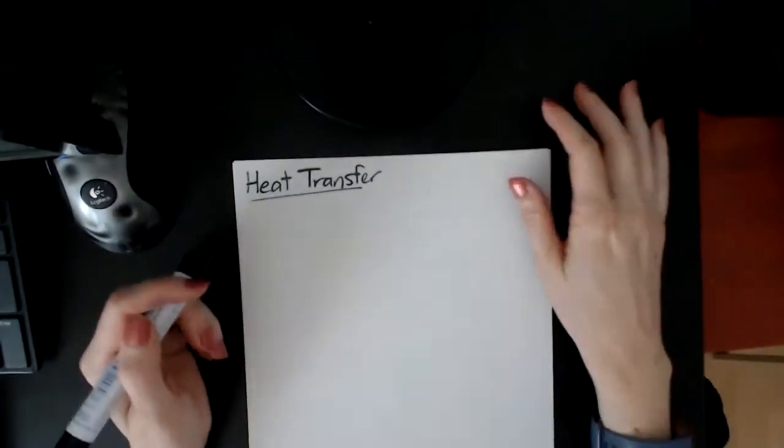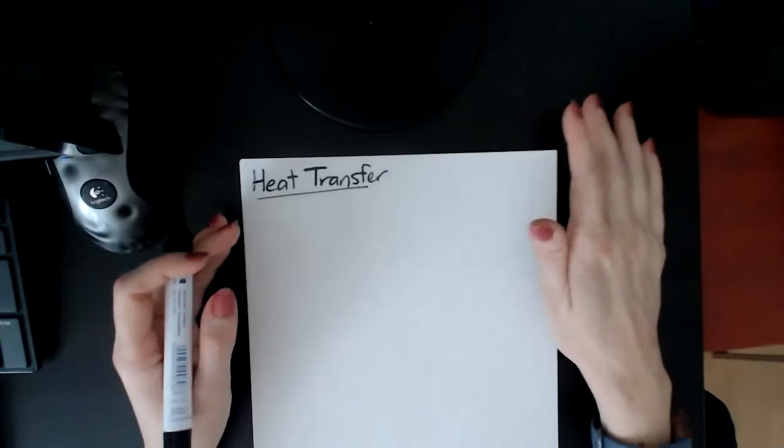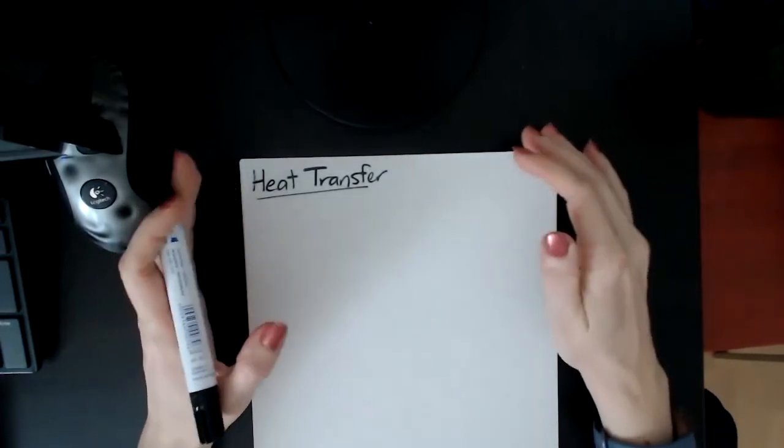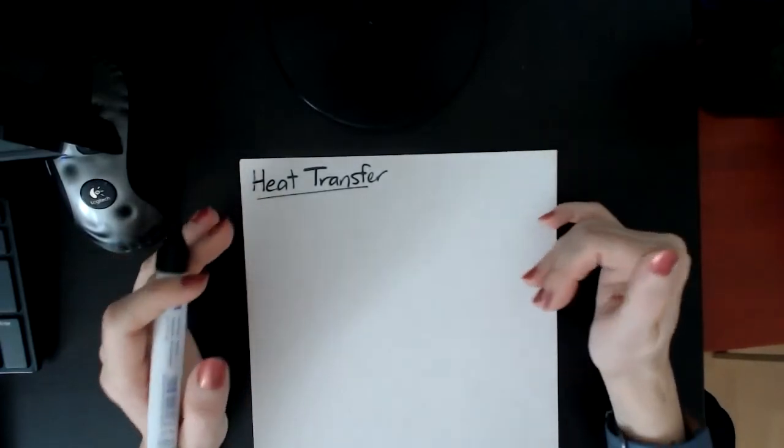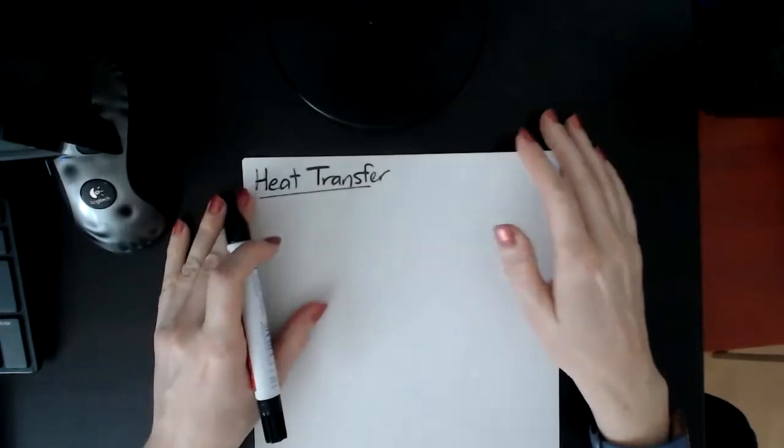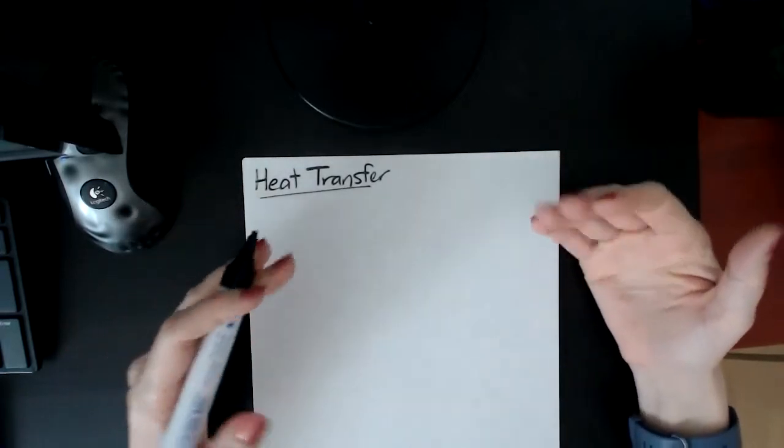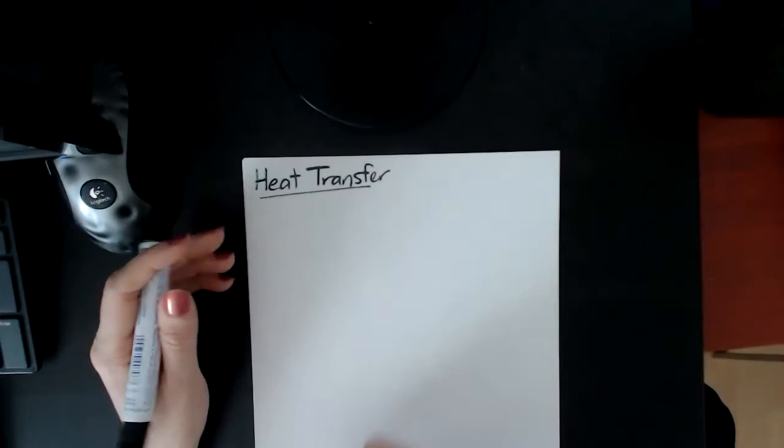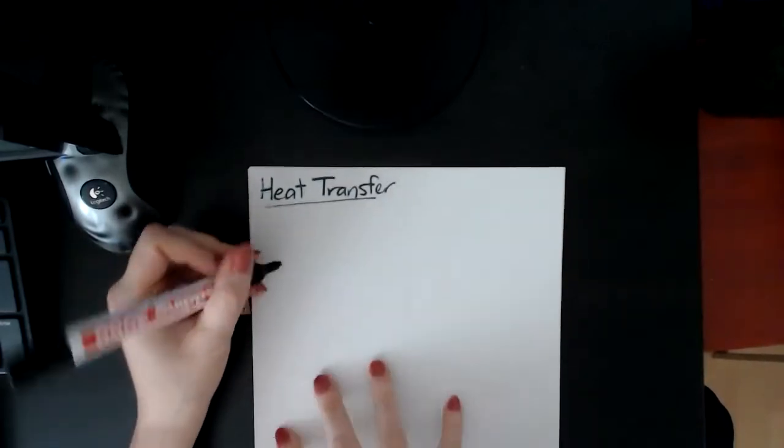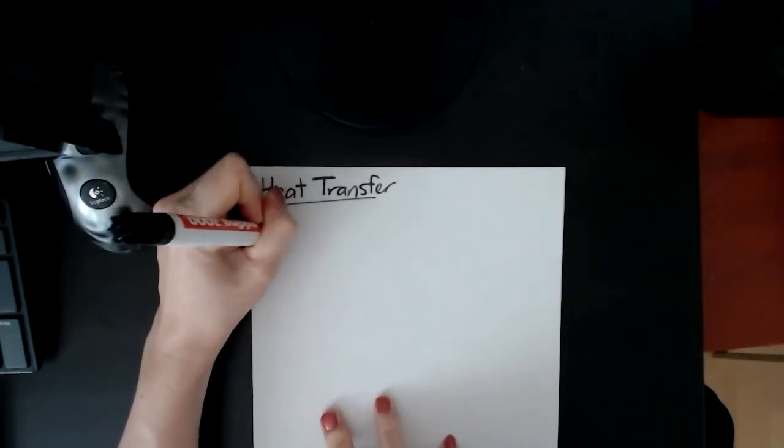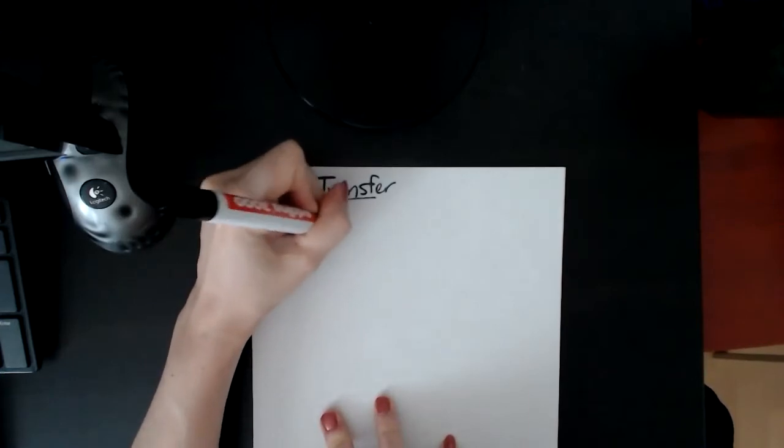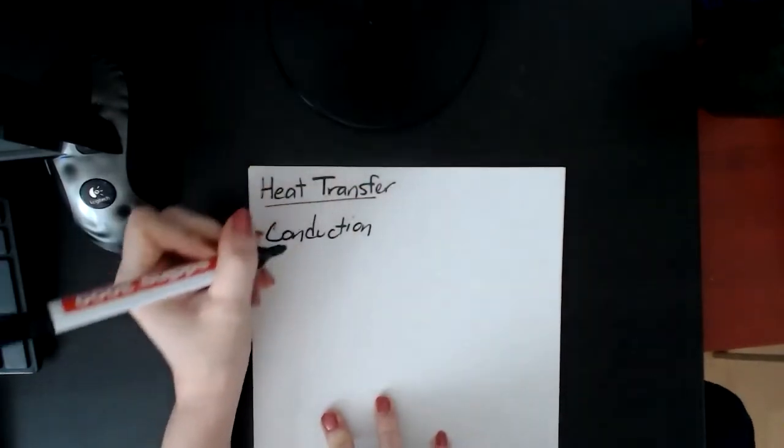This is one of the topics that somebody requested. There are three ways that heat energy can be transferred from one place to another - either lost or transferred. When I say lost, it's not really lost, but released from an object or taken into an object. And these are conduction, convection, and radiation.